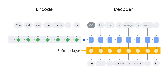The simplest one, called greedy search, is to generate the token that has the highest probability. A better approach that produces better results is called beam search. In that case, you use the probabilities generated by the decoder to evaluate the probability of sentence chunks rather than individual words, and you keep at each step the most likely generated chunk.